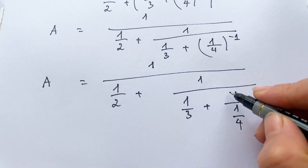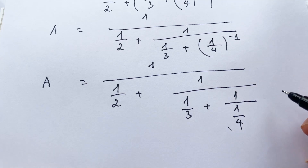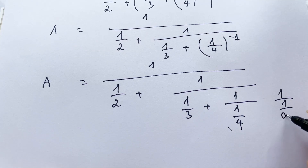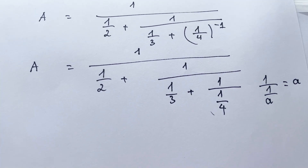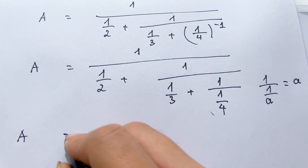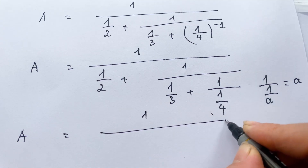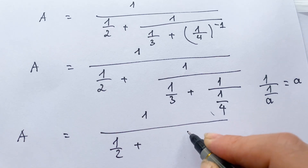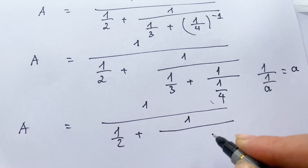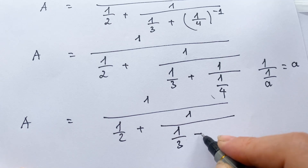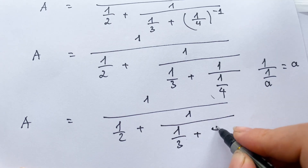For the number here, one over one over a equals a. So we can say a equals one over one-half plus one over one-third plus one-fourth.